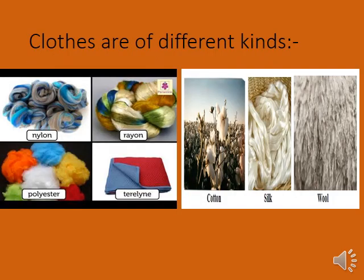First, clothes are of different kinds. Clothes are made of fibers. We get fibers from cotton plants, sheep, and silk worms. We get cotton from cotton plants, wool from sheep, and silk from silk worms.